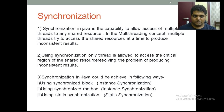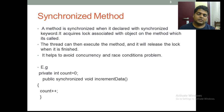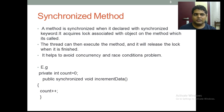A synchronized method is a method declared with the synchronized keyword. The important point is that it acquires the lock associated with the object on which the method is called. Before making any method synchronized, it is necessary to acquire the lock on the object on which it is called. The thread can then execute the method and it will release the lock when it is finished.